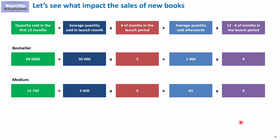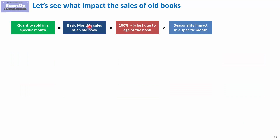For old books, we estimate the quantity sold each month by first looking at the basic monthly sales of an old book, then accounting for the fact that it's older — the older it is, the lower percentage of the basic monthly sales we would be selling — and finally accounting for seasonality as well.